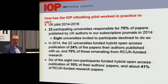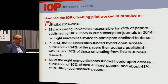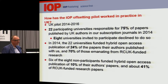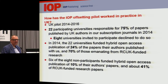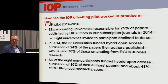In 2014, those 22 universities funded hybrid open access for 24% of the papers their authors published with us, and 70% of those papers came from RCUK-funded research. The target for RCUK last year was 45% compliance, so we had 70% gold compliance. At the end of the year we looked at six of those eight non-participating universities and found that only 10% of their authors' papers were published open access in our hybrid journals, and only 41% of RCUK-funded research papers — below the threshold RCUK was aiming for.